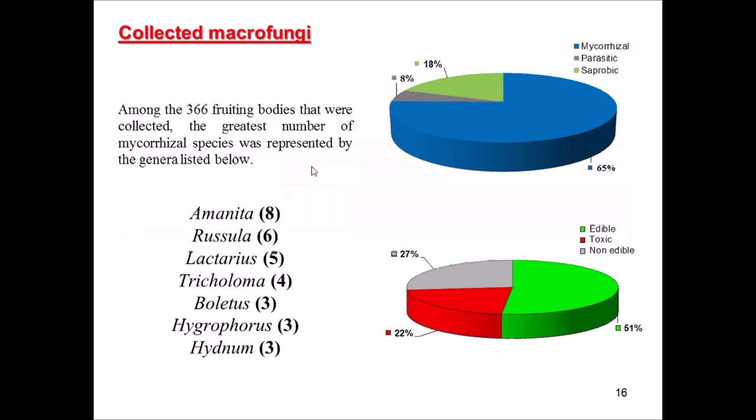Let's look at some edible and toxic species growing in northwestern Tunisia. During the survey I collected 366 fruiting bodies. The majority of species collected are mycorrhizal and belong to specific genera like Amanita, Russula, Lactarius, Tricholoma, Boletus, Hygrophorus, and Hydnum.